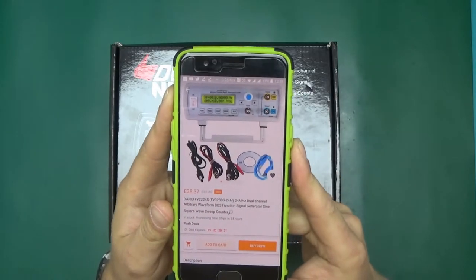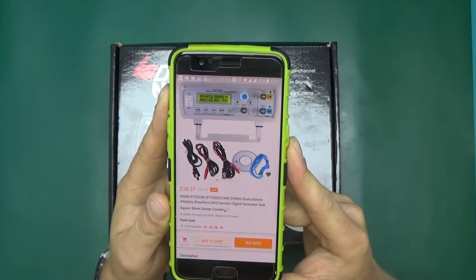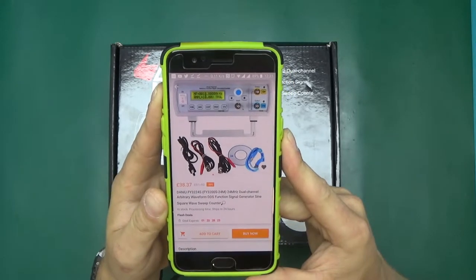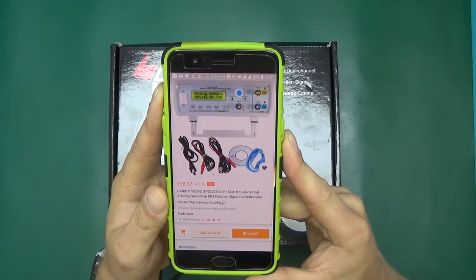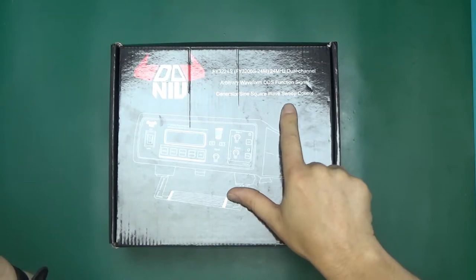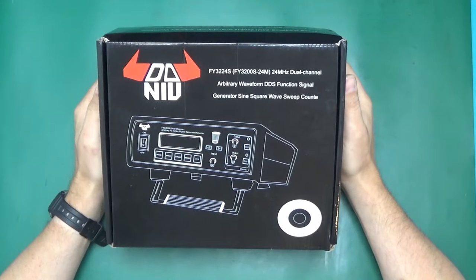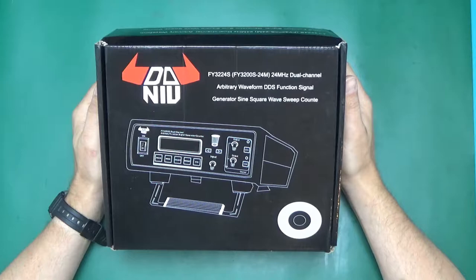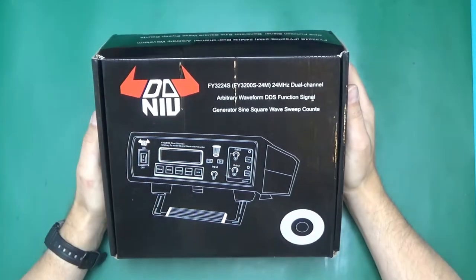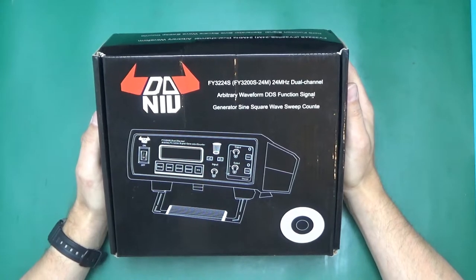Here it is. It came from Banggood as I said, 38 pounds and 37 pence. It's a FY3224S, 24 megahertz dual channel arbitrary waveform DDS function signal generator, sine square wave sweep counter. The box itself is very interesting. They knew Daniel, Don U Factory. This thing has got horns resembling a bull, I guess. Reminds me of Chicago Bulls basketball team. The box made me smile.